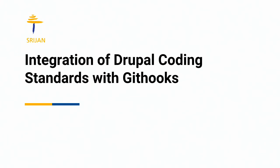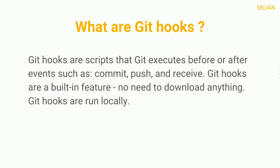Git set go. So what are git hooks? Git hooks are scripts that git executes before or after events such as commit, push and receive. Git hooks are a built-in feature — no need to download anything. They just run locally. This is just a technical definition.